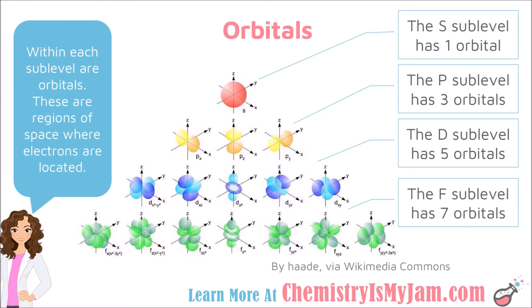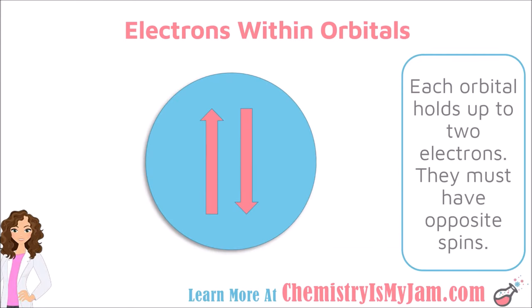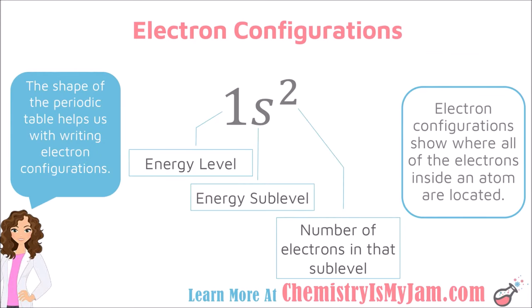These are the orbitals located within the sublevels, which are located within the energy levels, and these orbitals are the regions of space where you will find the electrons. The electrons are located within orbitals. Each orbital holds up to two electrons, but they must have opposite spins, indicated by arrows — one going up and one going down. So we have energy levels, which contain sublevels, which contain orbitals, which contain electrons. We locate each electron within the atom using an electron configuration.